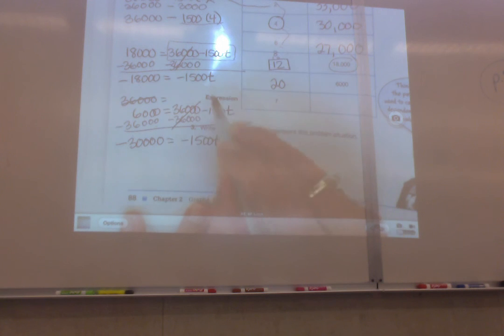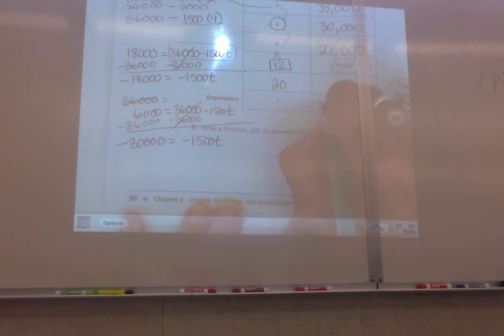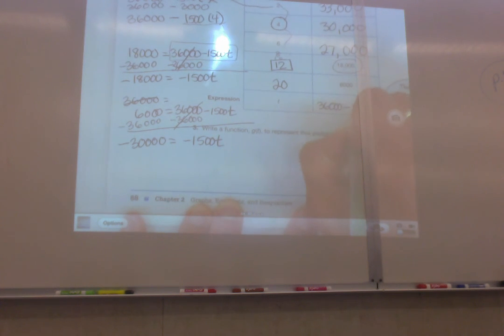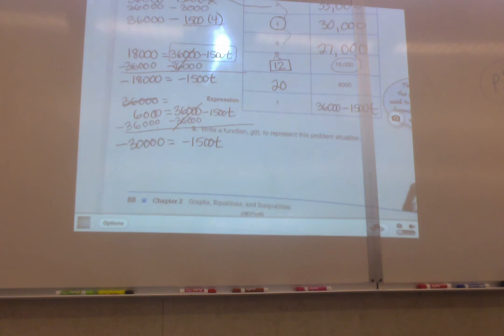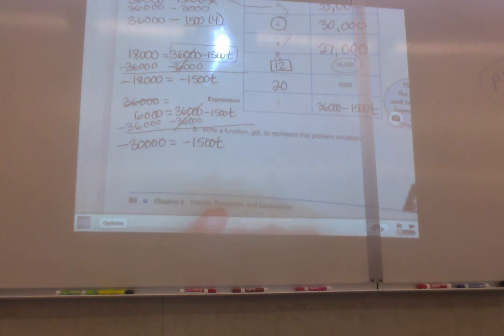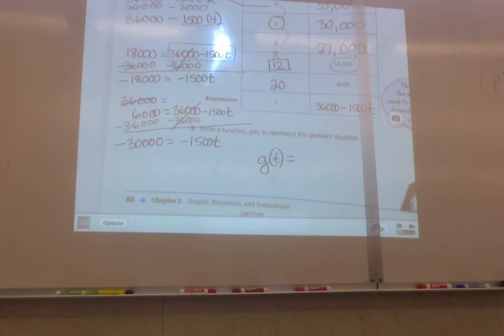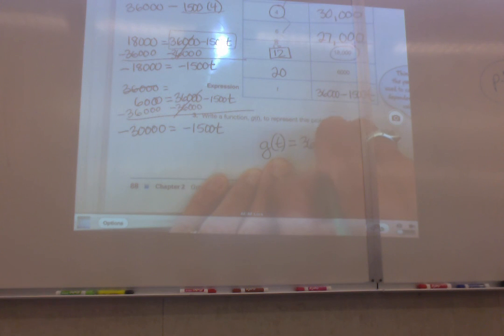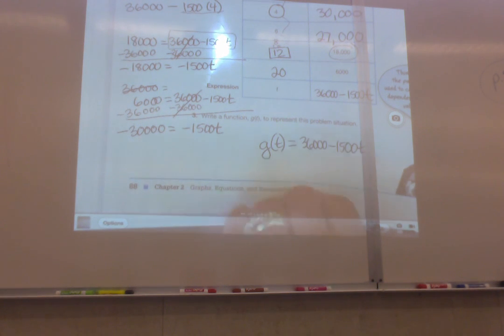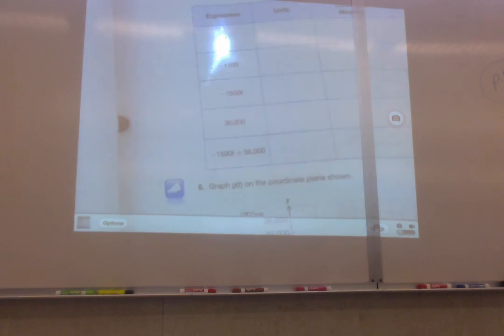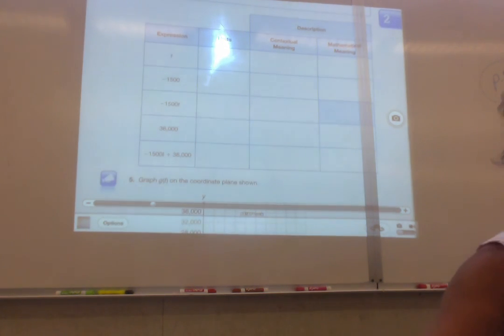Write a function to represent the situation. We've already done that. G of T equals, what's our function? What have we been doing over and over? 36,000 minus 1500T. Moving over to the next page.